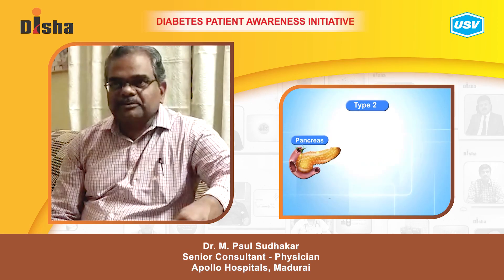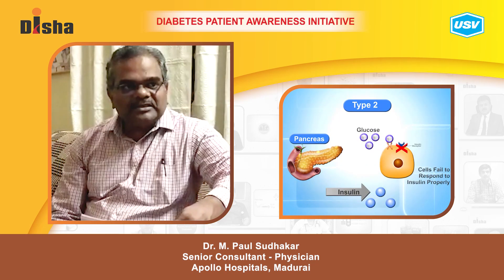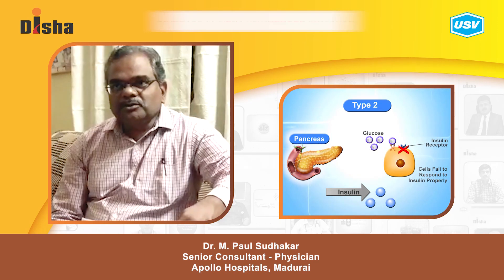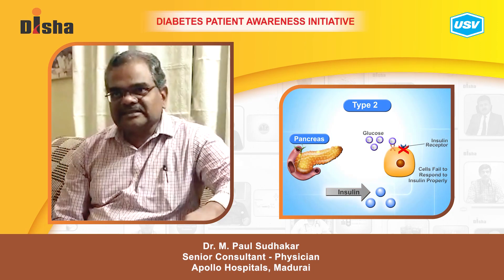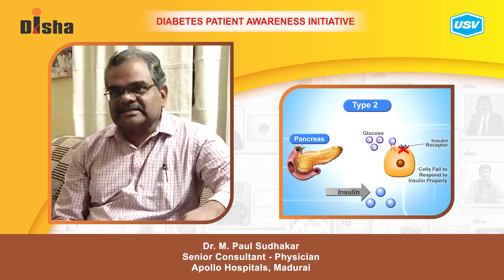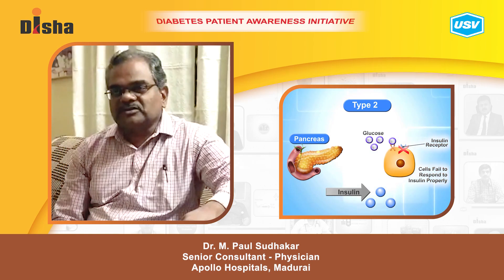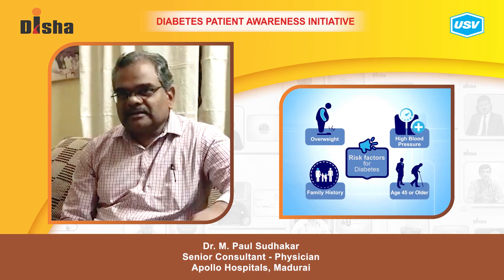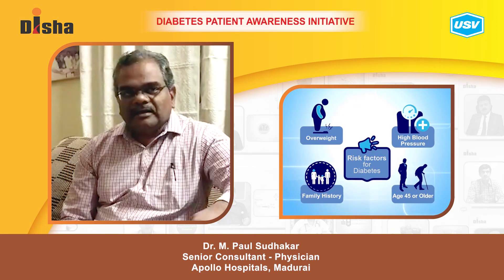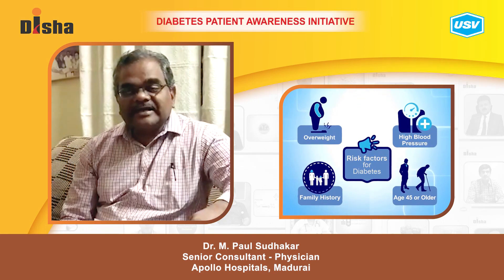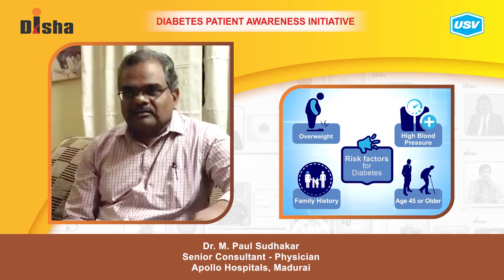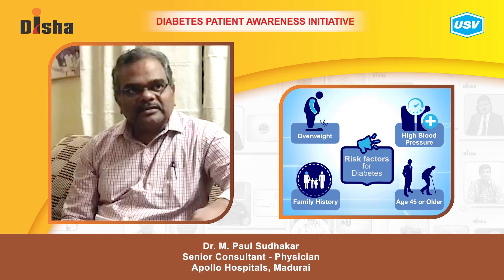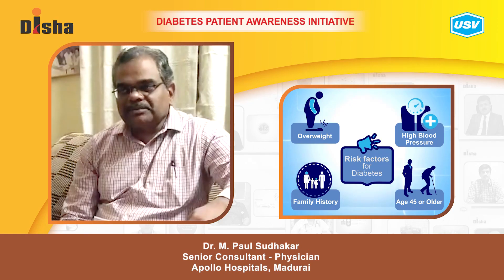The second type is Type 2 diabetes, which is more of a lifestyle disease. It is due to insulin deficiency and also insulin resistance — more of insulin resistance. There are many causes, including obesity and genetic factors. For example, if both parents have diabetes, their children are more prone to develop Type 2 diabetes.